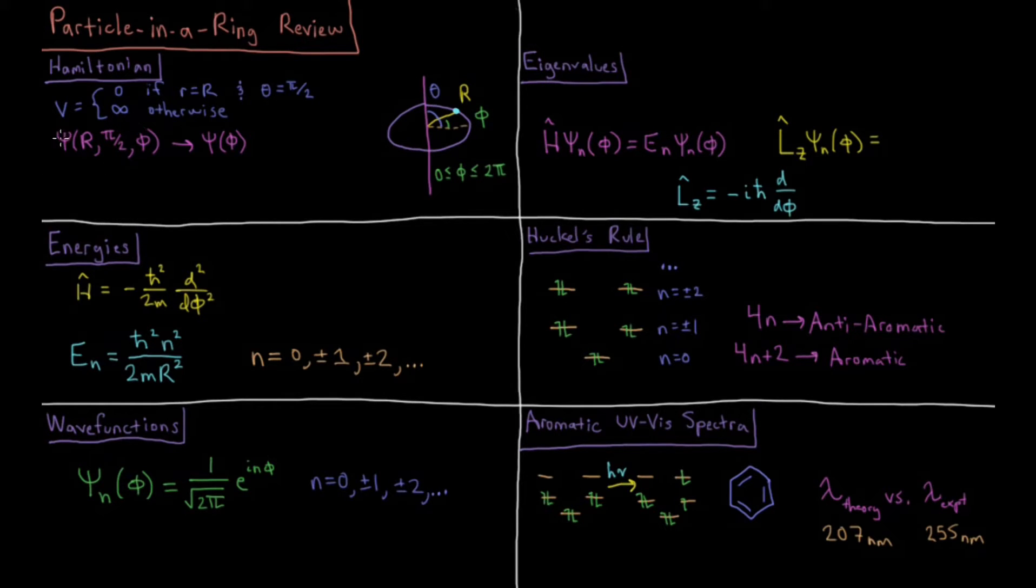In spherical polar, psi is psi of capital R, pi over 2, and phi. So it really reduces down to a one dimensional representation where it's psi of phi. Phi is from zero to 2 pi, 360 degrees, and phi above 2 pi just maps back down. So it's a boundary condition that it has to wrap around itself.